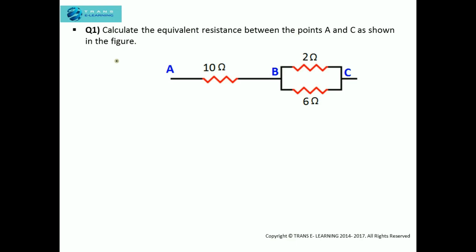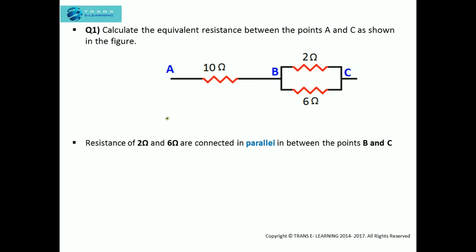The first question: calculate the equivalent resistance between the points A and C as shown in the figure. You can see that the resistances of 2 ohm and 6 ohm are connected in parallel between the points B and C, whereas between the points A and B we have a 10 ohm resistor.